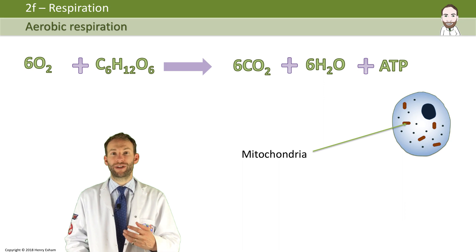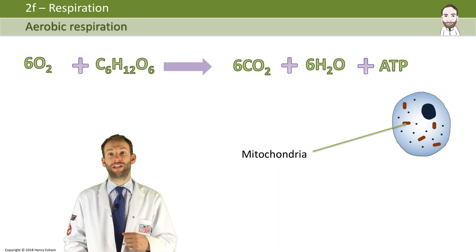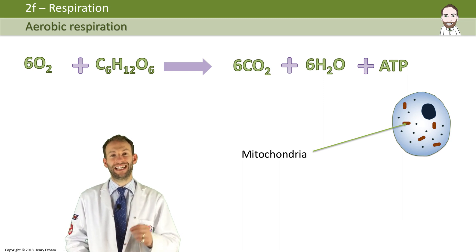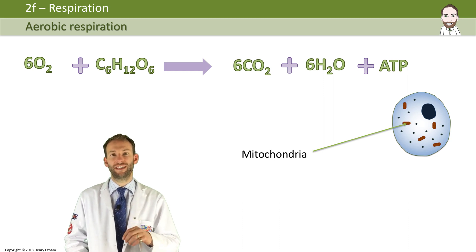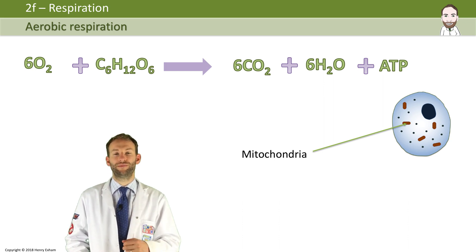Aerobic respiration produces lots and lots of energy for the cell in the form of ATP, and it happens inside the mitochondria, the little organelles inside the cell.